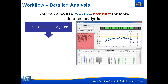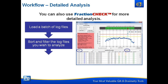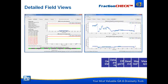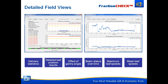You can also do a lot more detailed analysis. You can load a batch of log files, filter and sort, and then select different desired graphs and view detailed results for individual fields. These detailed field views show delivery statistics, leaf position results, a Gantt triangle effect, beam status over time, and maximum and mean leaf speed — extremely advanced analysis of every field you're delivering.